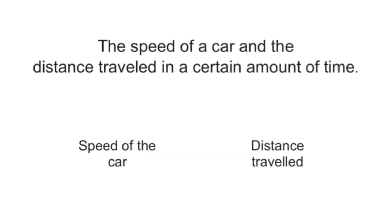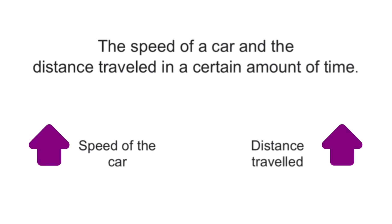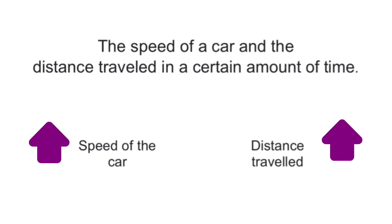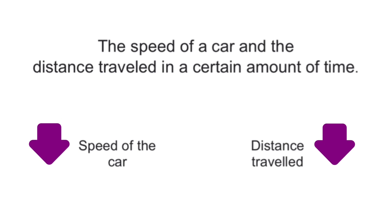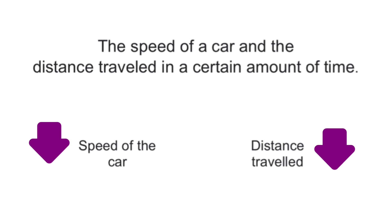The speed of a car and the distance traveled in a certain amount of time are directly proportional to each other. If a car travels faster, it can cover more distance in a given time. On the other hand, if a car travels at a slower speed, it can cover less distance. This tells us that the speed of a car is directly proportional to the distance it travels in a certain amount of time.